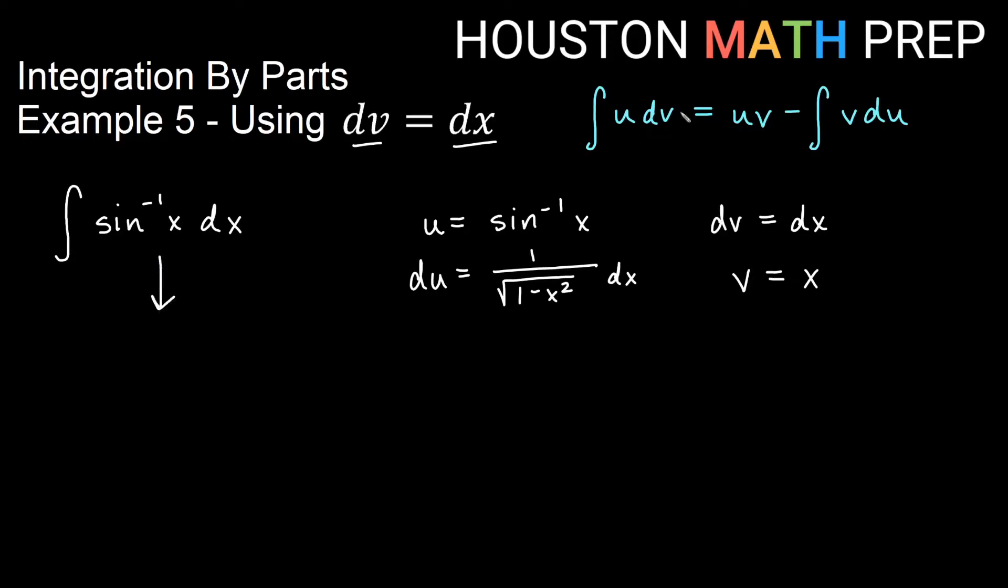So if we use our integration by parts formula, uv minus integral vdu, then that will give us u times v would be x times inverse sine of x minus the integral of vdu is going to be the integral of x over the square root of 1 minus x squared dx.